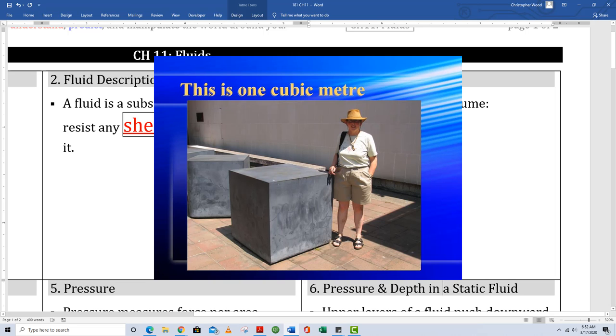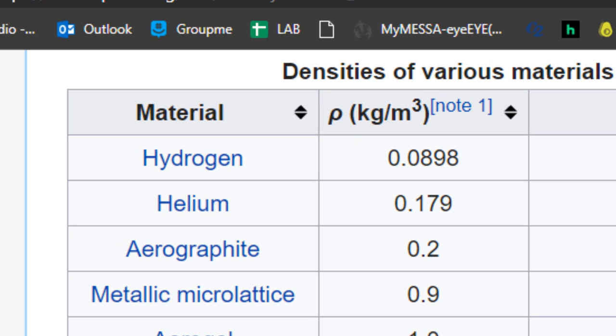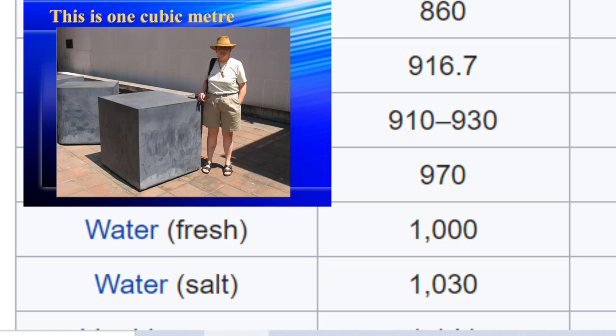This is one cubic meter. Here's a table of various densities. Notice hydrogen is the least dense. If I had a cubic meter of hydrogen and measured its mass, it would come out to 0.0898 kilograms. Check out fresh water. If I filled that cubic meter container full of fresh water, it would have a mass of 1,000 kilograms. Which is why we say the density of water is 1,000 kilograms per cubic meter.